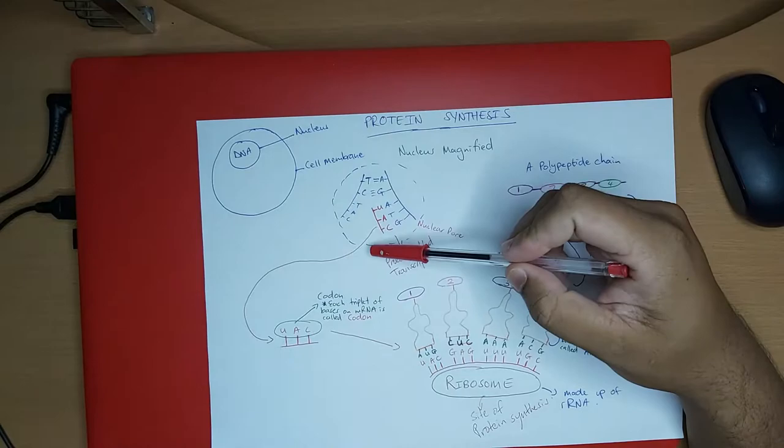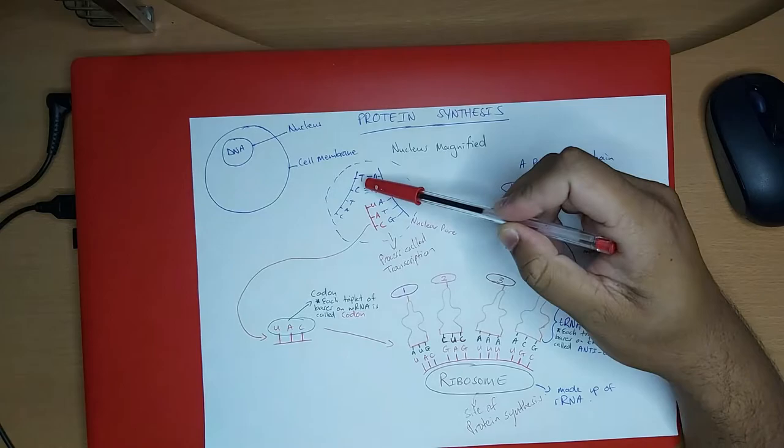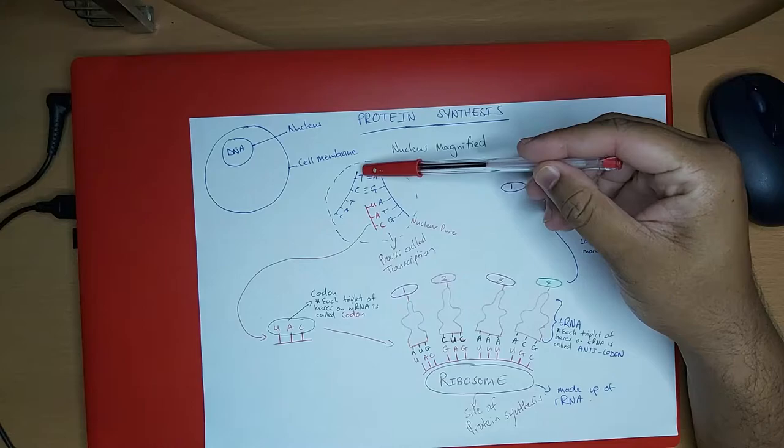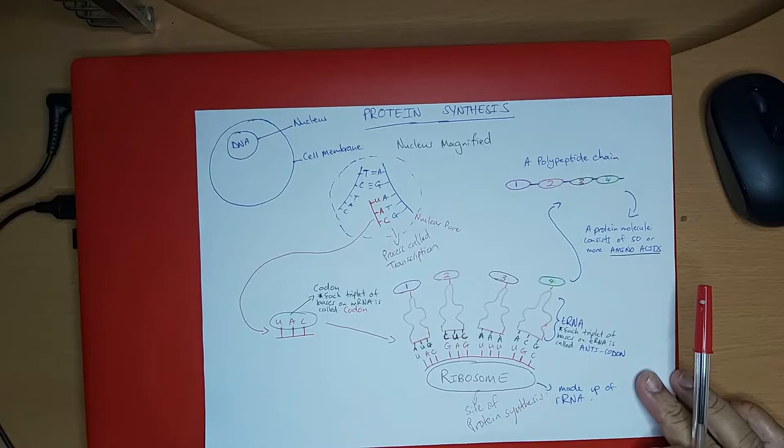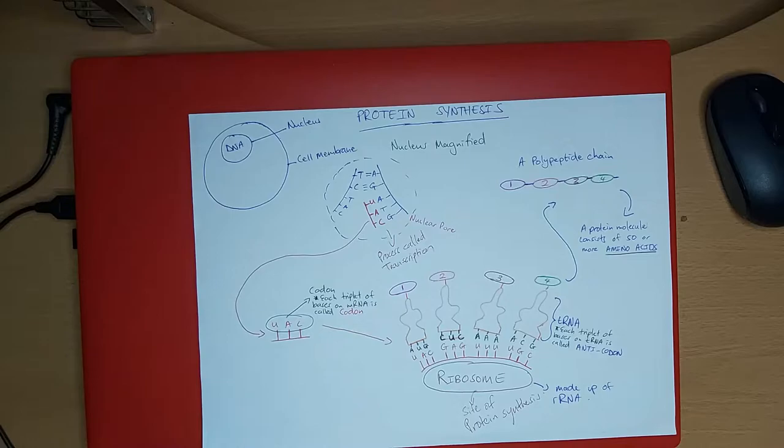The first thing that happens is that the DNA strand unzips. These bases break apart, but some of them still remain attached. You can see that the thymine and adenine are attached, and the cytosine and guanine are attached here. So the first step is: the DNA strand unzips partially.